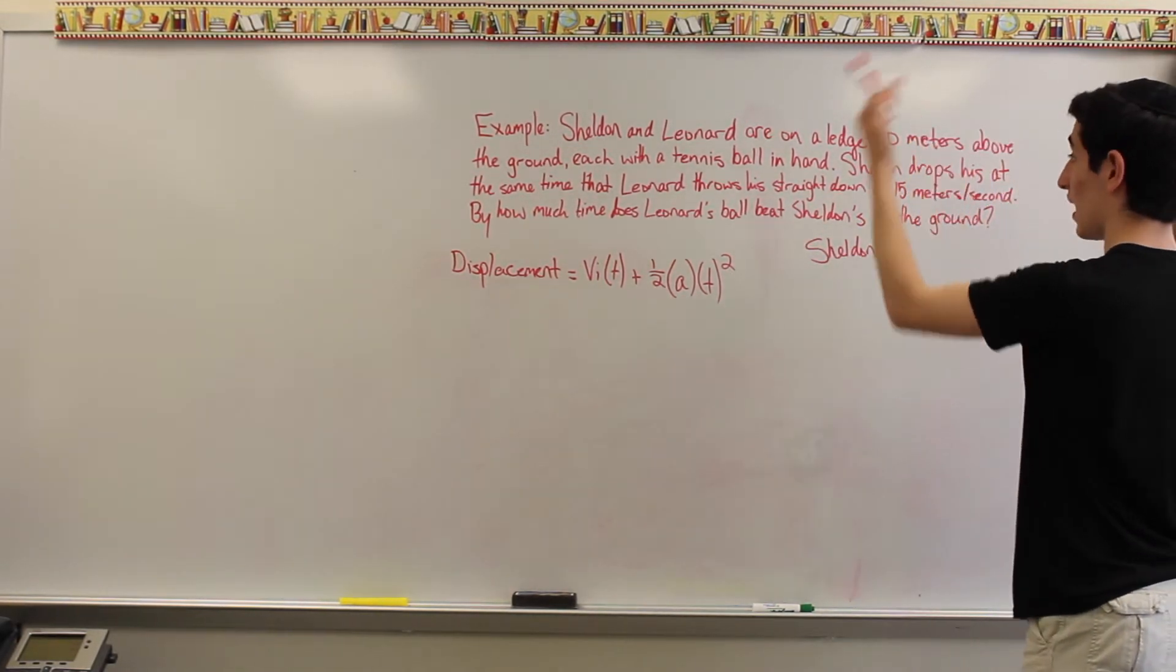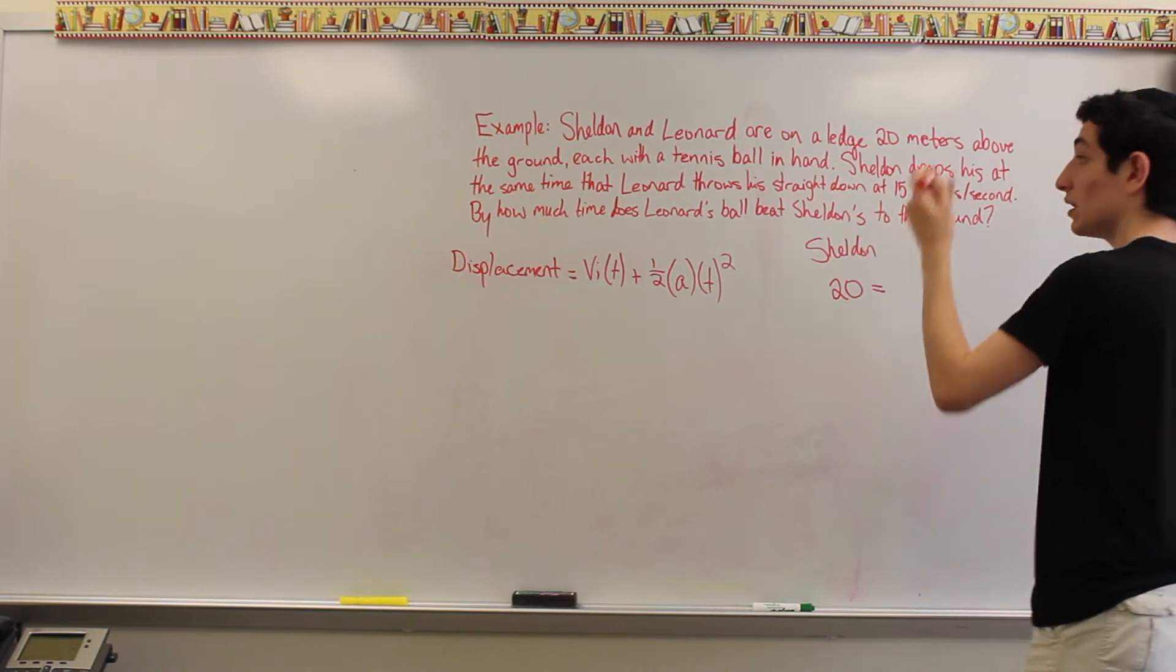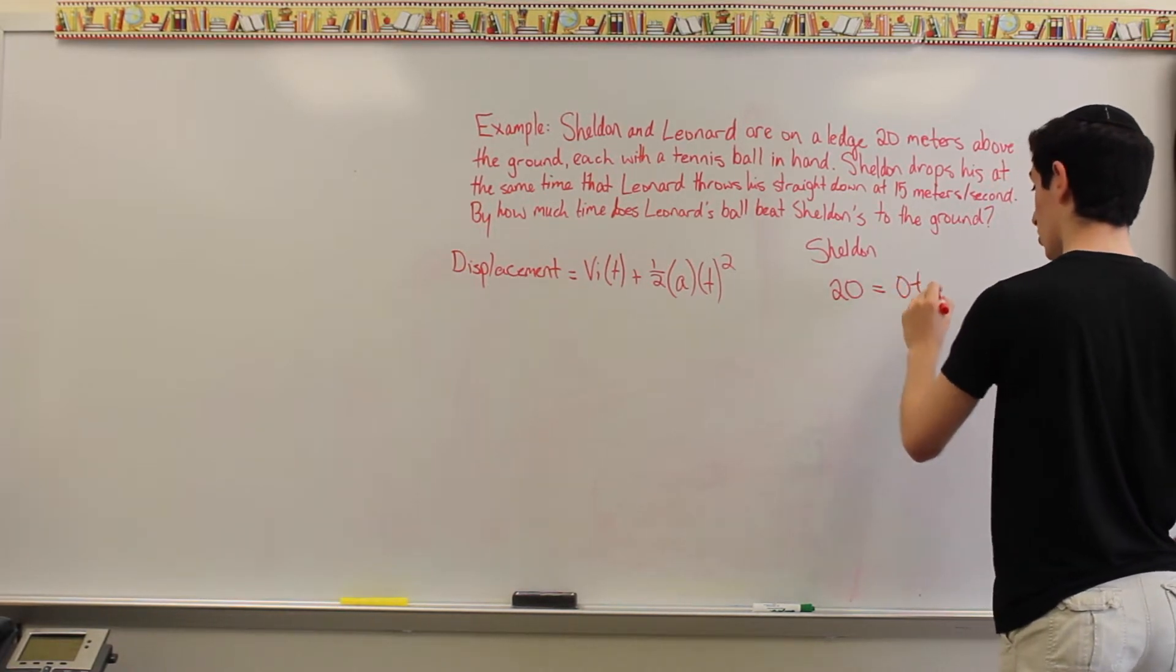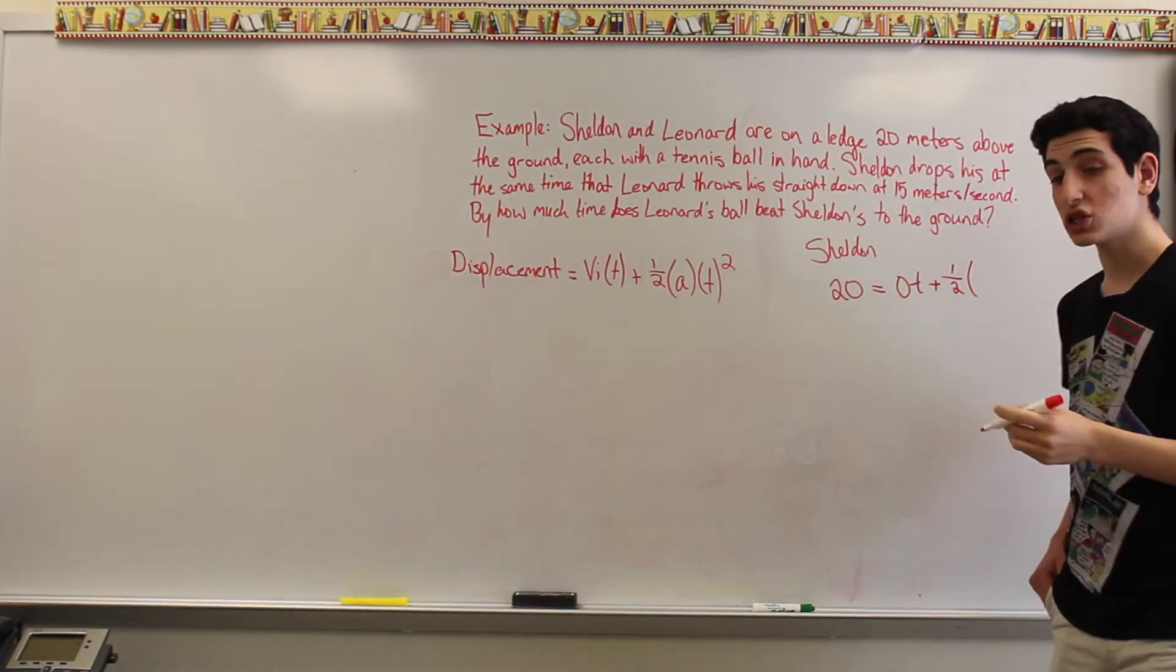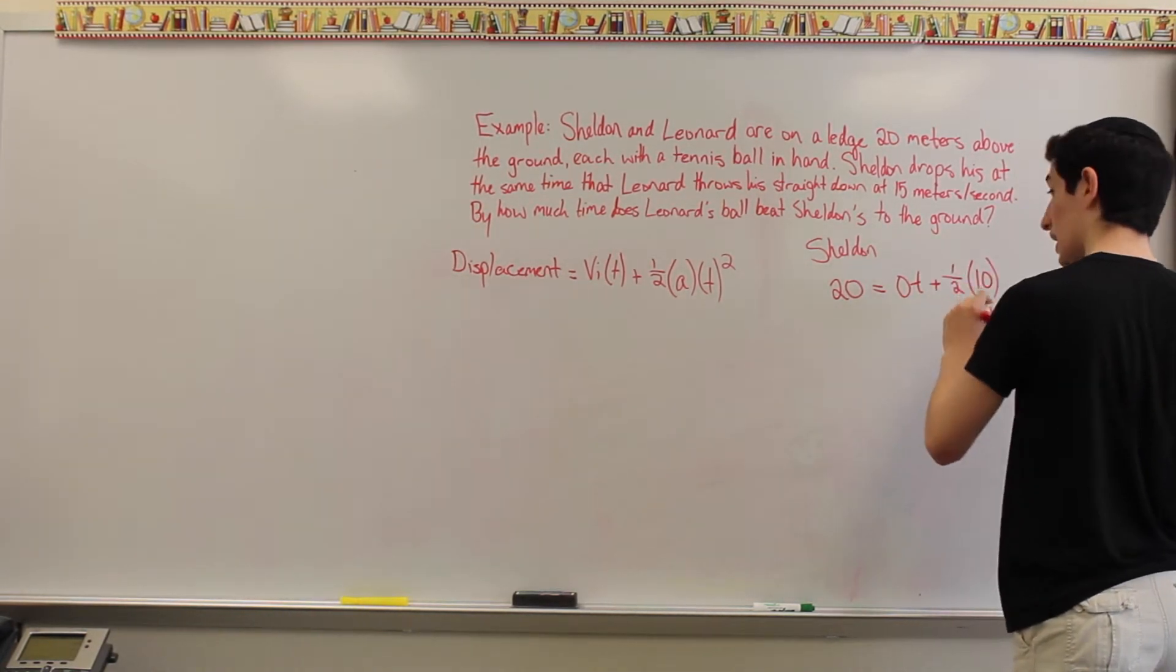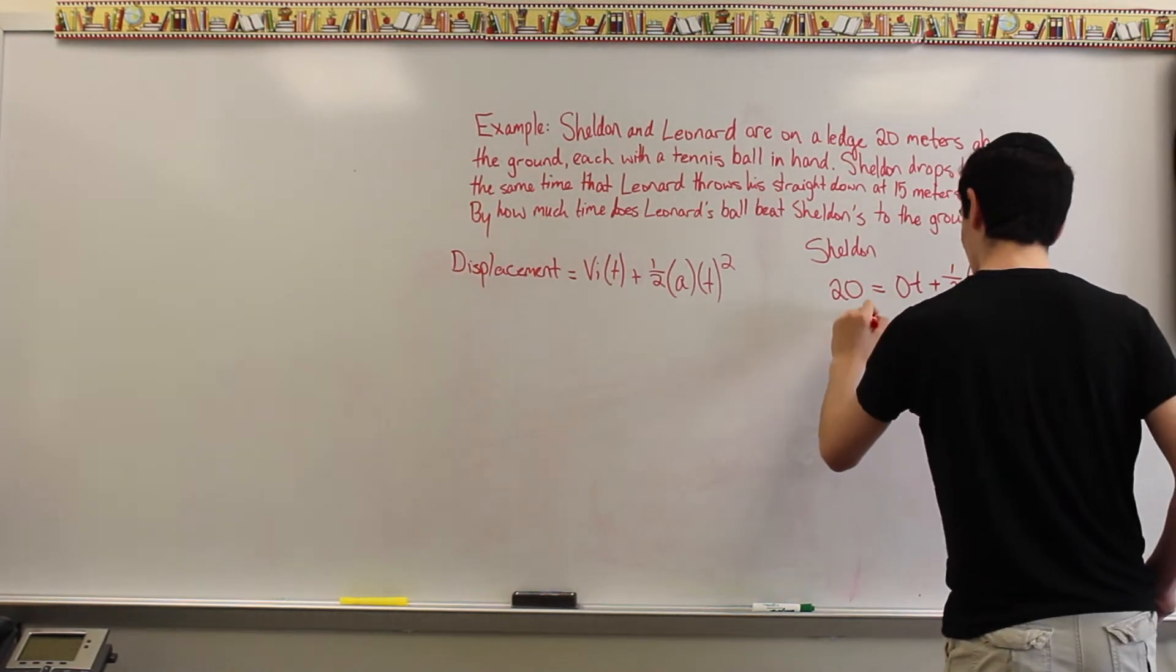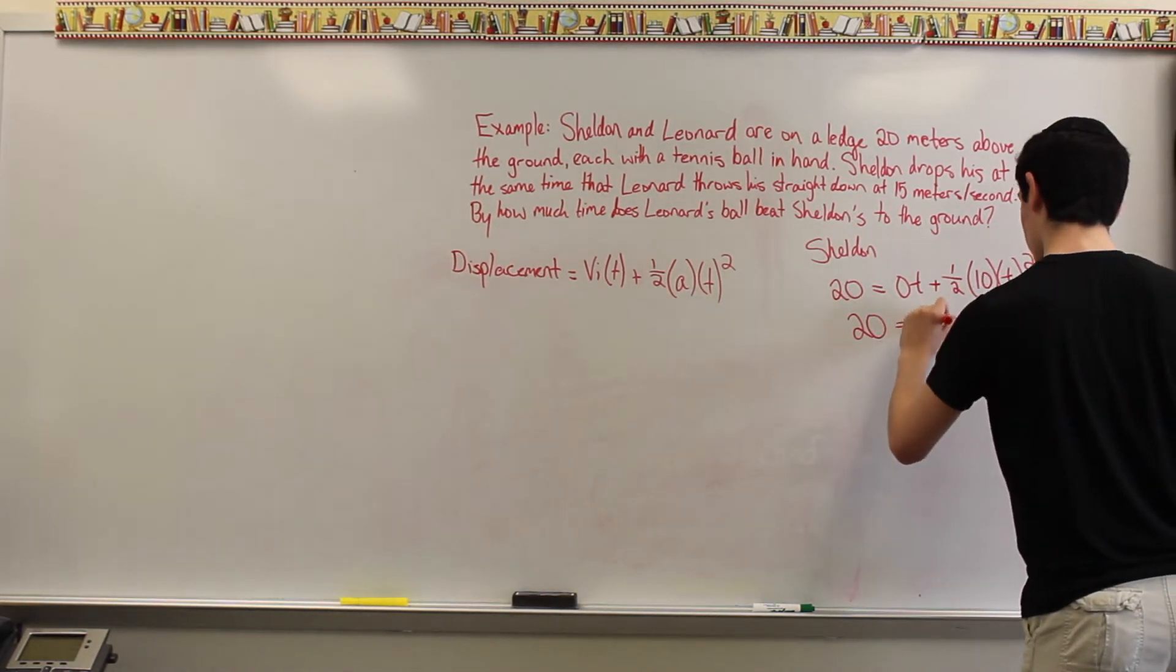So, we have 20 equals Sheldon just drops it and therefore there's no initial velocity. So, we'll have that value be zero and the time is unknown, so we'll leave that as t plus half times acceleration due to gravity, which the approximate value of is 10 meters per second, so we will put that as 10 times time squared. So, immediately we can take out the zero t, so we can just have it as 20 equals half times 10 is 5, 5t squared.